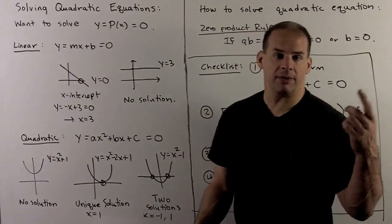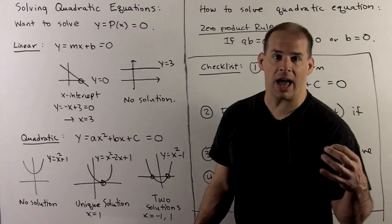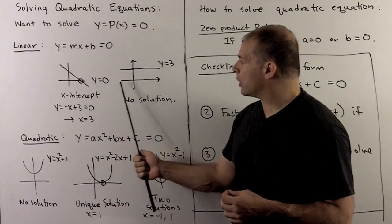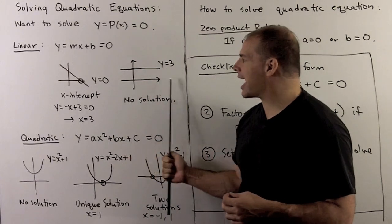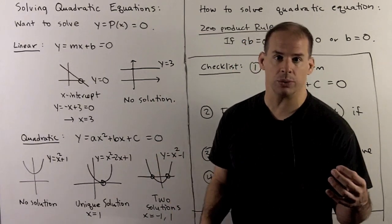If the slope's zero, then I have two cases. So these are horizontal lines. If we're not looking at the x-axis, then there'll be no solution. If we had the x-axis, we would have infinitely many solutions.